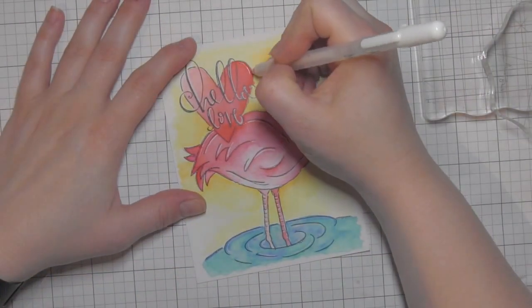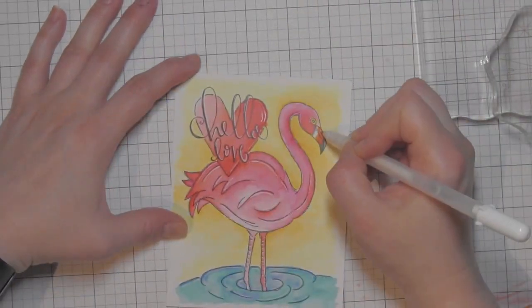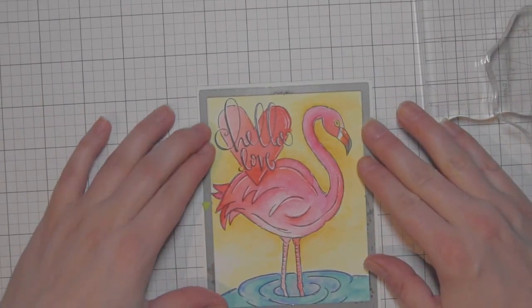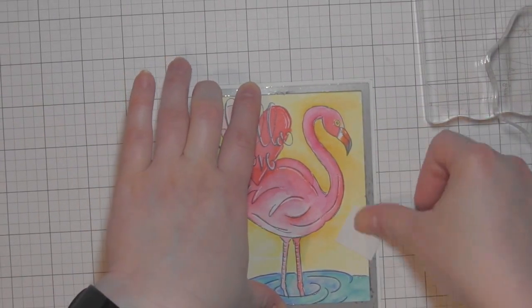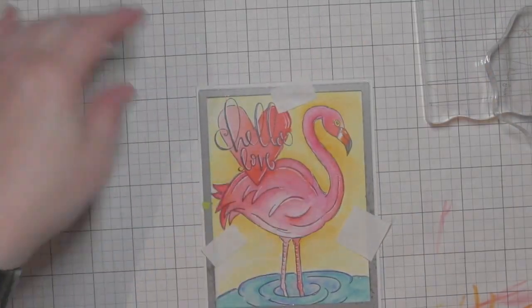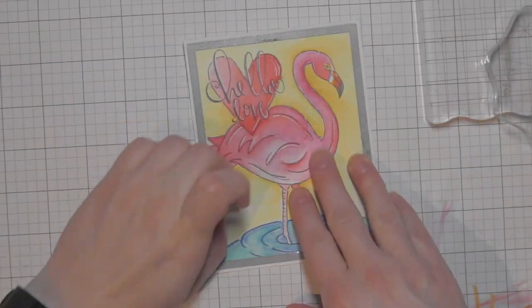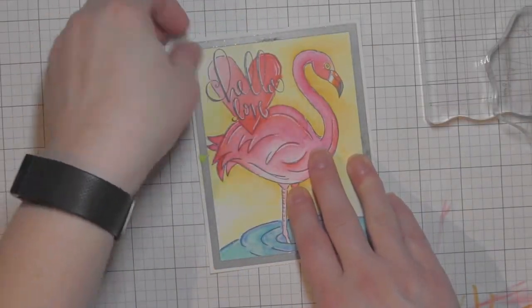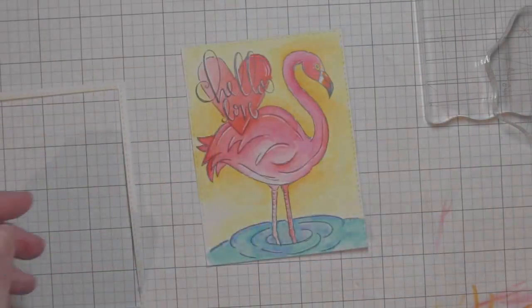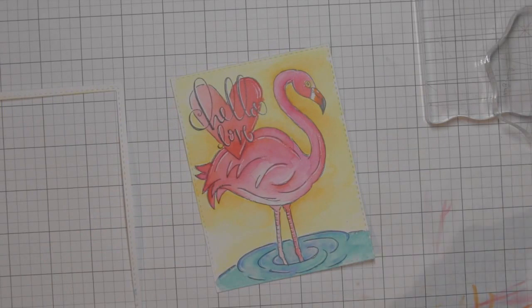Once I have that done, I'm going to take one of the stitched rectangle dies from Simon Says Stamp and die cut this panel. This is going to make it slightly smaller than an A2 sized card, so there will be a nice border all the way around when I place this on the front of my card base. Plus it adds that stitching detail to add a little bit of interest. I'll just peel off that outside, pop that out, and you can see that great stitching detail—nice finished edge.